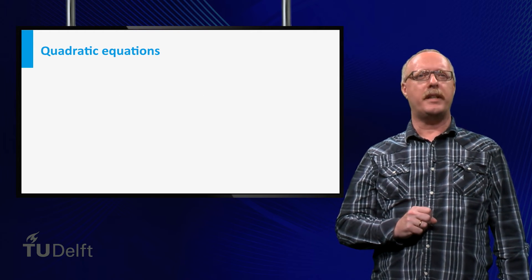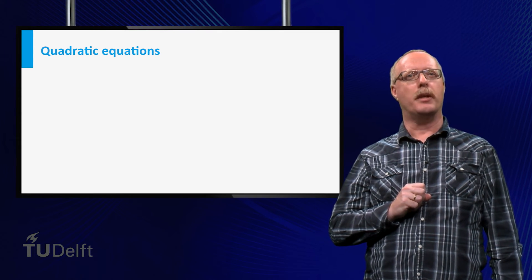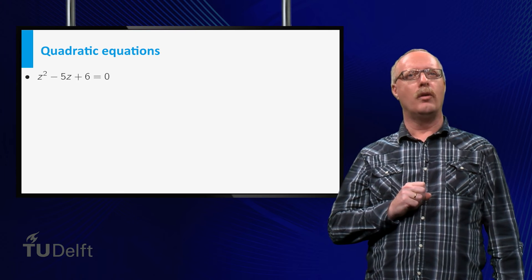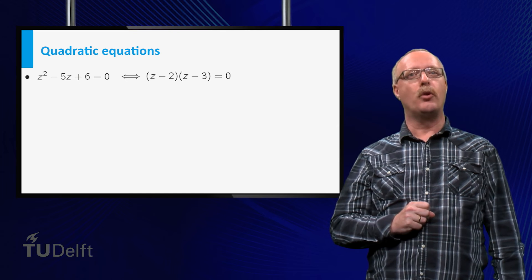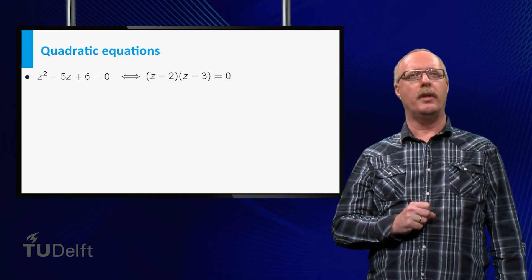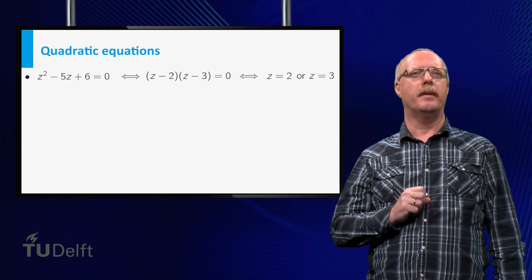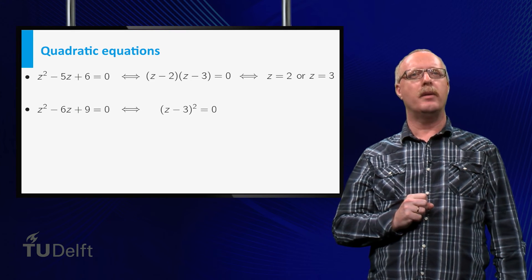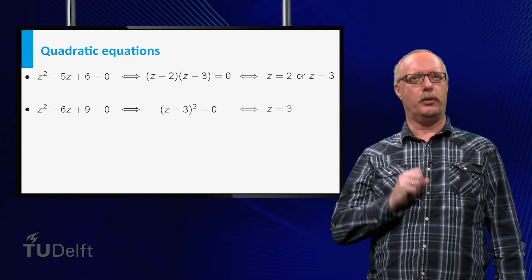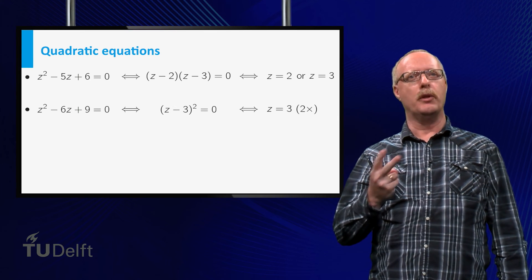Now we have that every quadratic equation has two solutions in terms of complex numbers. For instance, if it can be factored, it might have two different real solutions, z is equal to 2, and z is equal to 3. And if it can be factored into a single square, we have only one solution, or in fact, two equal real solutions.